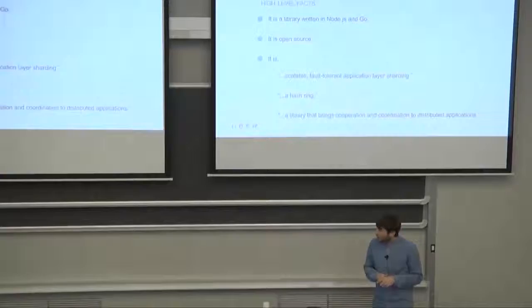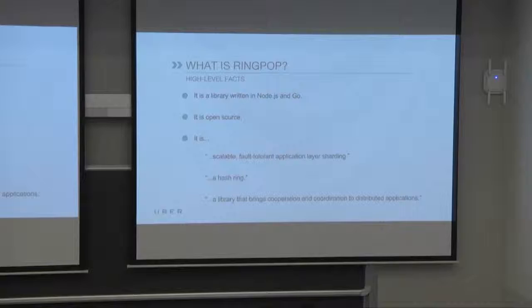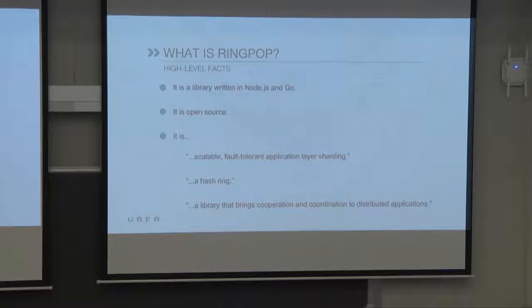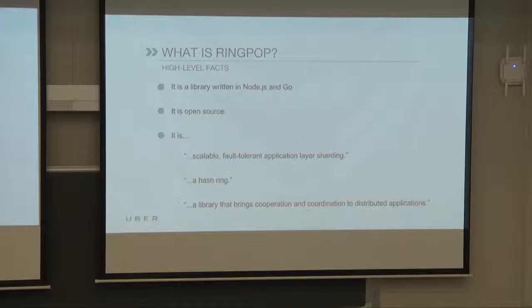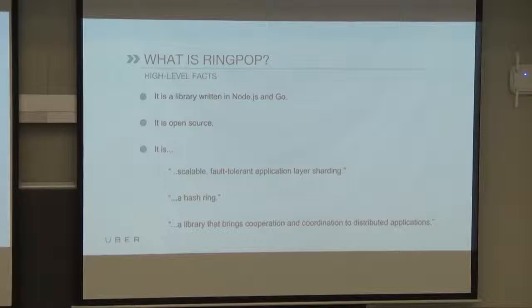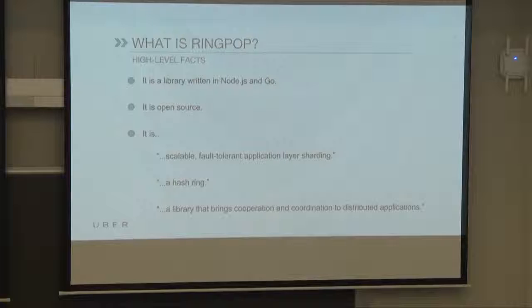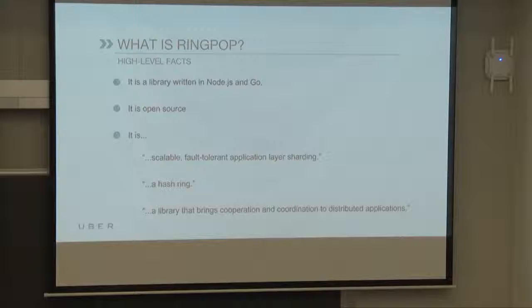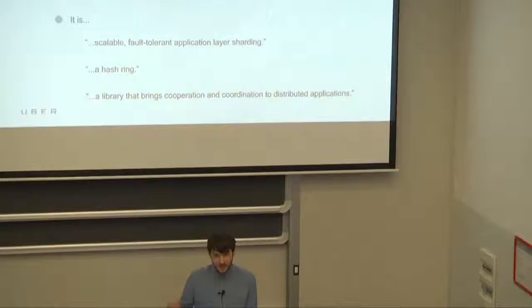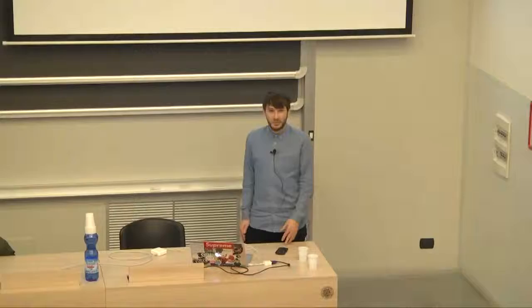When describing what Ringpop is, back about a year ago when I created the GitHub repo, I put in the description field: scalable and fault tolerant application layer sharding. Though that might be what you can do with Ringpop, I don't know if that's its essence. Some people call it just a hash ring at Uber. These days I'm trying to boil it down and call it a library that brings cooperation and coordination to distributed applications. Before I dive into the details of Ringpop, let me tell you about the motivation behind it and why we chose to build it.